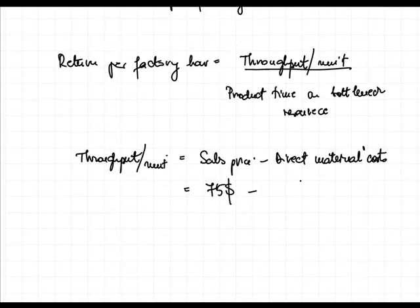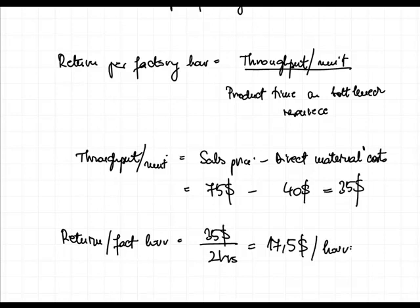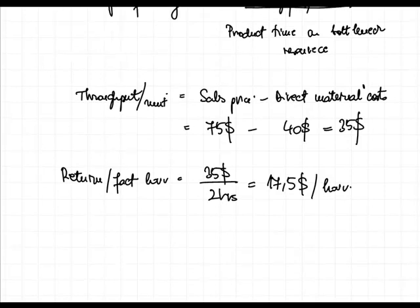So the return per factory hour is equal to $35 divided by 2 hours, which is $17.50 per hour. In other words, our bottleneck resource is able to generate $17.50 per hour — that is the throughput it generates.